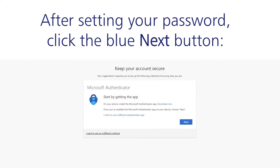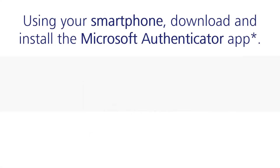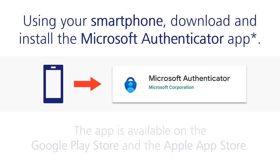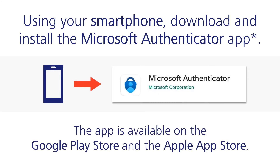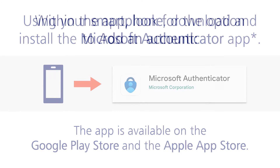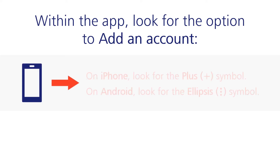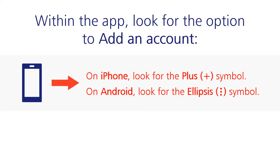After setting your password, click the blue Next button. Using your smartphone, download and install the Microsoft Authenticator app. The app is available on the Google Play Store and the Apple App Store. Within the app, look for the option to add an account. On iPhone, look for the plus symbol.